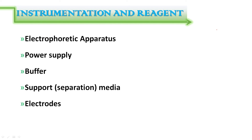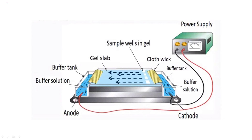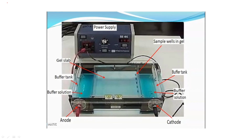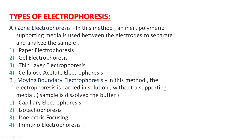The electrophoresis apparatus consists of a power supply, buffer, supporting media, and electrodes (anode and cathode). There are two main types: Zone electrophoresis — including paper electrophoresis, gel electrophoresis, thin-layer electrophoresis, and cellular electrophoresis — and Moving boundary electrophoresis — including capillary electrophoresis, isotachophoresis, isoelectric focusing, and immunoelectrophoresis.